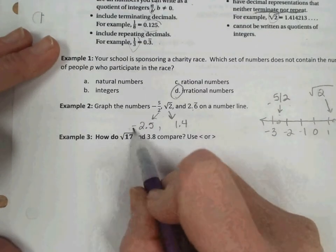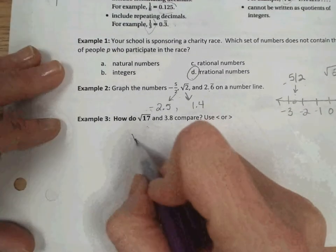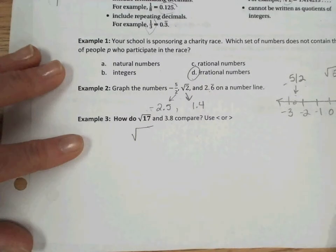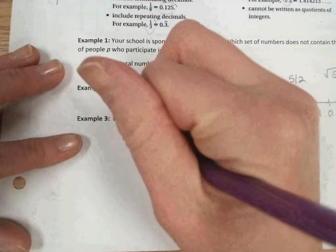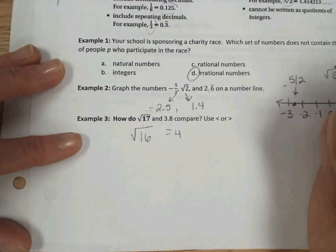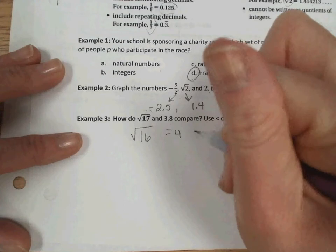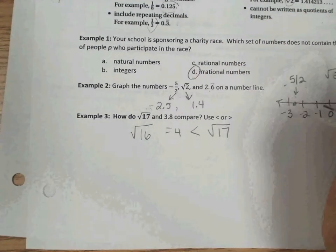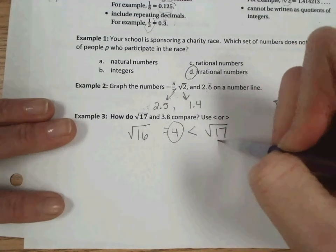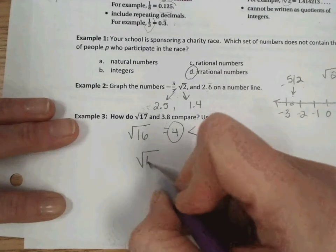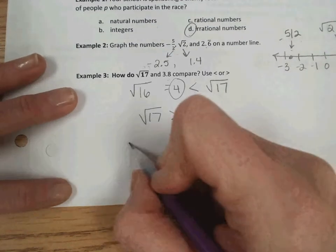Next, we compare the square root of 17, which would be an irrational number since 17 is not a perfect square, and 3.8. So one easy way to do that would be to think about, well, what is close to the square root of 17 that is a perfect square? And that would be the square root of 16. So the square root of 16 we know is 4. And we know the square root of 15 is greater than, or sorry, the square root of 17 would be even greater than the square root of 16. Since 4 is greater than 3.8, we therefore know that the square root of 17 would be greater than 3.8 as well.